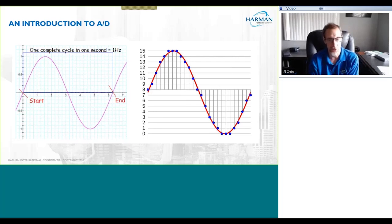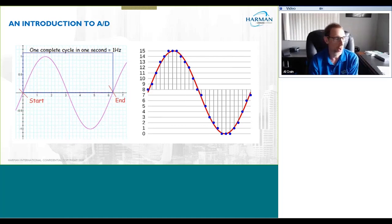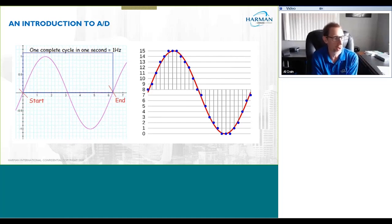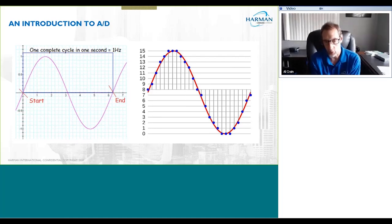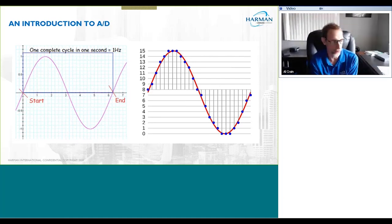This sine wave here as an example — just to keep the math simple — is just one hertz: one complete cycle over a period of one second. In the audible spectrum we have frequencies from 20 hertz all the way to 20,000 hertz. You would definitely want a lot more samples if you're sampling a much higher frequency like 20,000 hertz as opposed to one hertz.